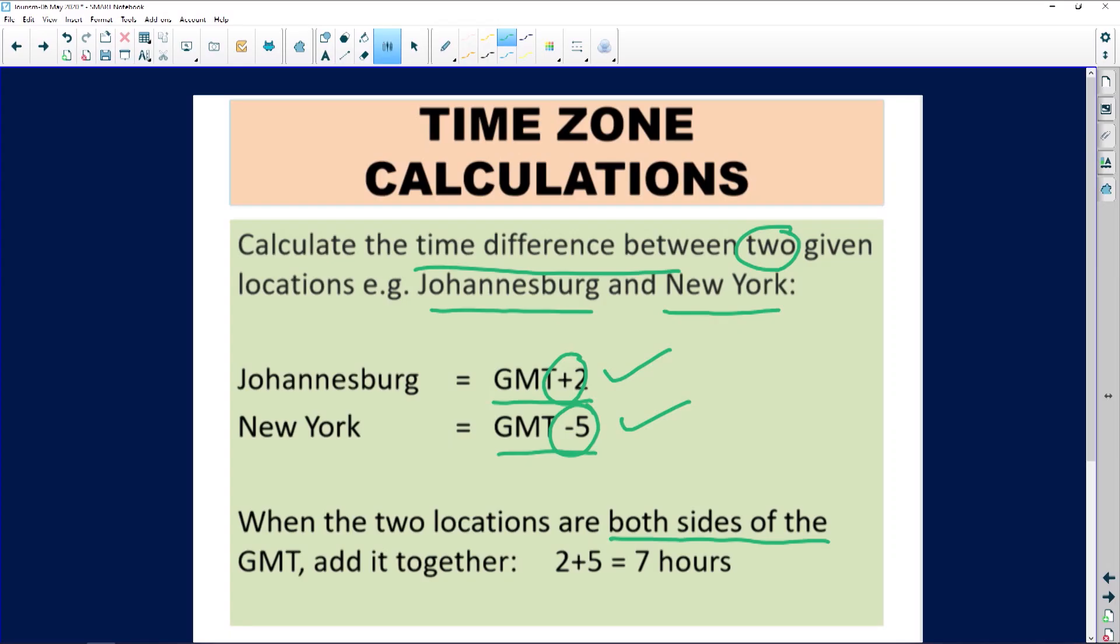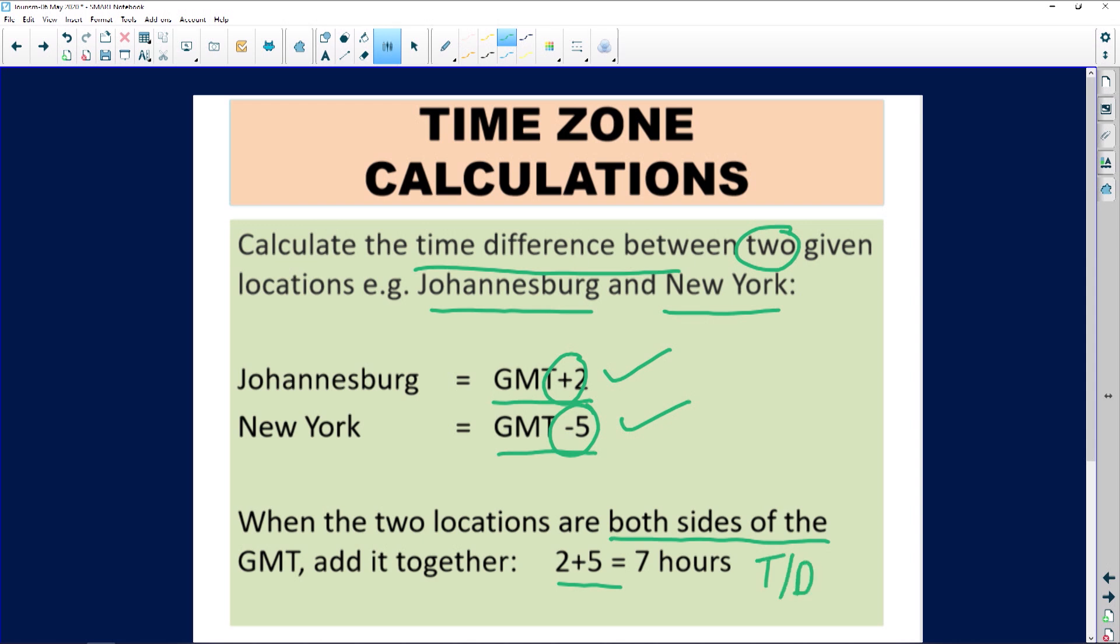The moment you know that these two are on different sides from the GMT we want to add these two numbers together. We said South Africa is GMT plus two, New York's GMT minus five. We've got a two and a five and we literally add the two together and we get seven hours, and we can even use an acronym - we call that the time difference.